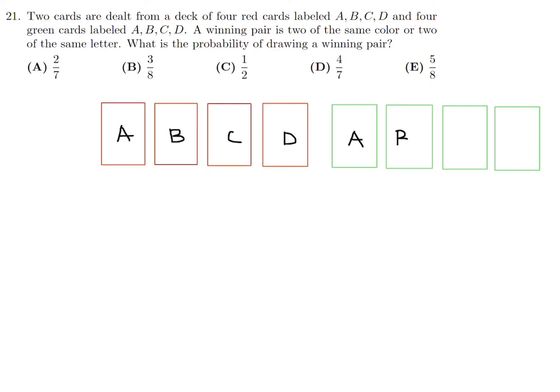It's a probability question, so it's going to be a numerator over a denominator. Let's first talk about the denominator — the total number. We have to deal two cards from eight. For the first card we have eight choices, and once that card is dealt we have only seven cards left — seven choices for the second card. Multiply them and we get 56.